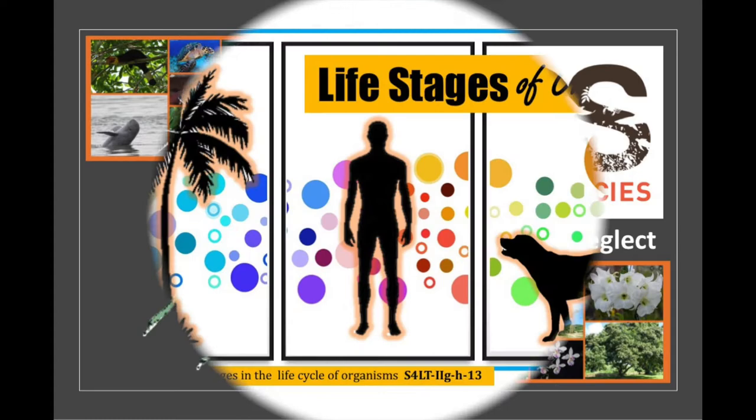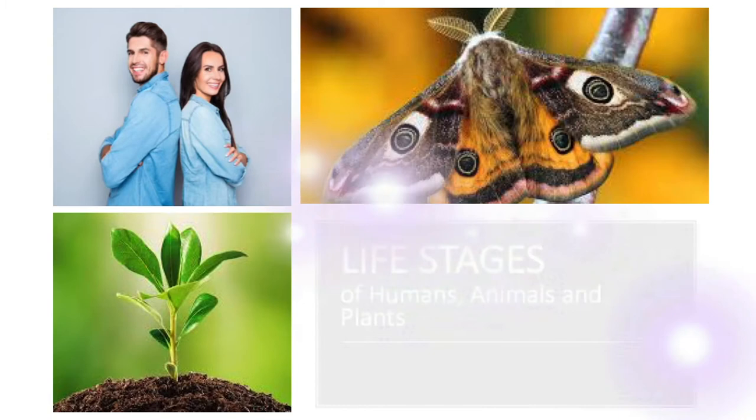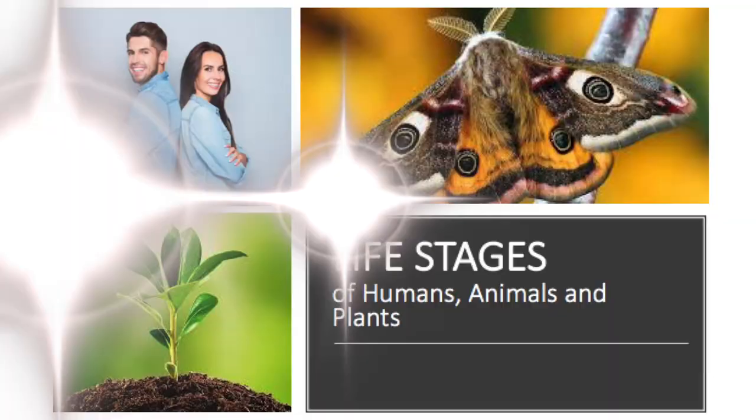All living things go through changes as they adapt, grow, and develop. Although individual organisms die, new ones replace them, which ensures the survival of the species. During its life cycle, an organism goes through physical changes that allow it to reach adulthood and produce new organisms. Since these changes are common within a species, they can be grouped into stages of development.